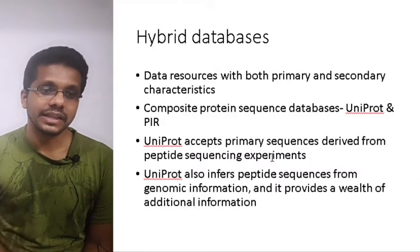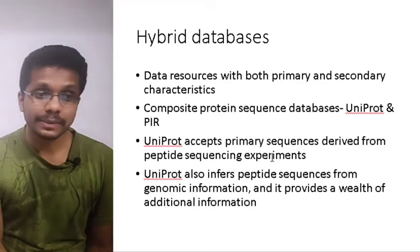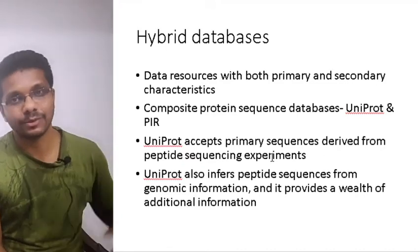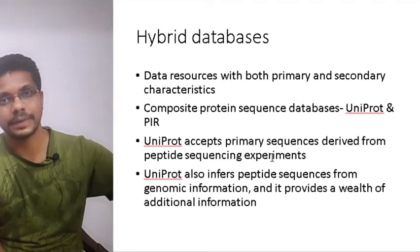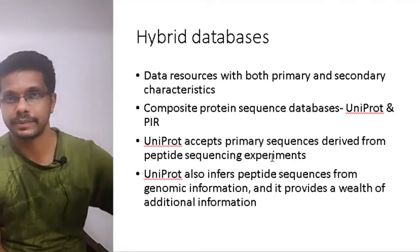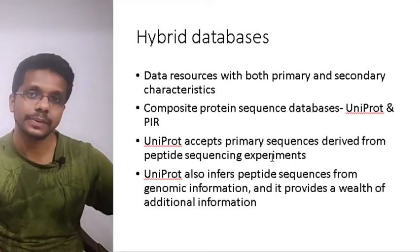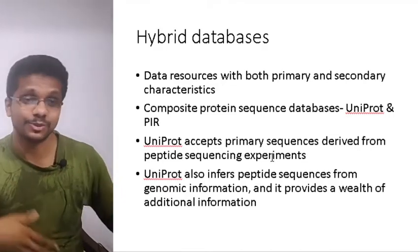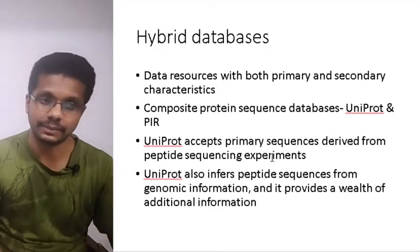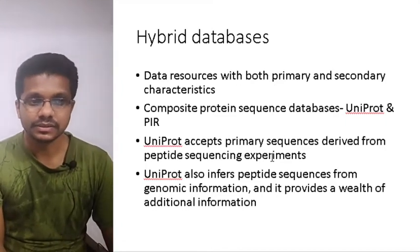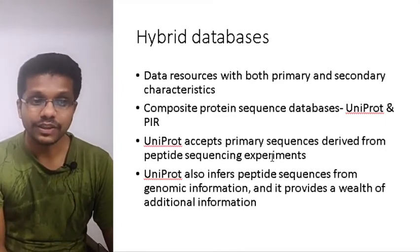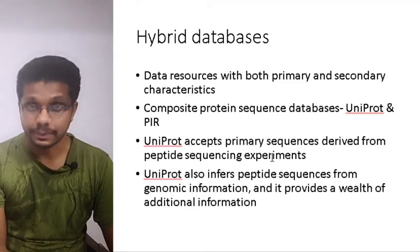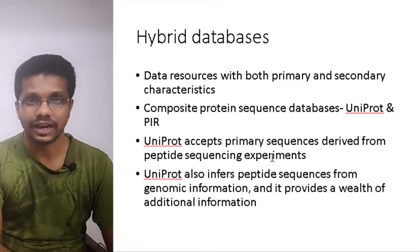There is something called the hybrid database, which is a combination of both primary and secondary databases. It supports real experimental work and based on this experimental work generates annotations and predictions. Many composite protein sequence databases are examples of hybrid databases, including UniProt and PIR.